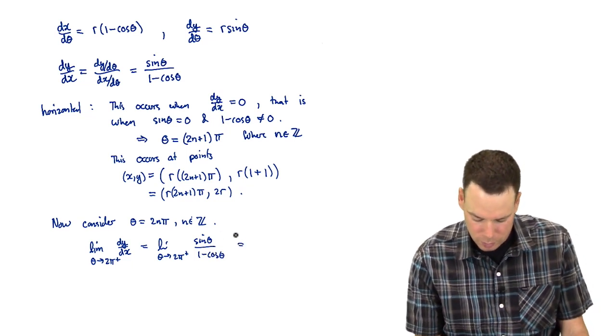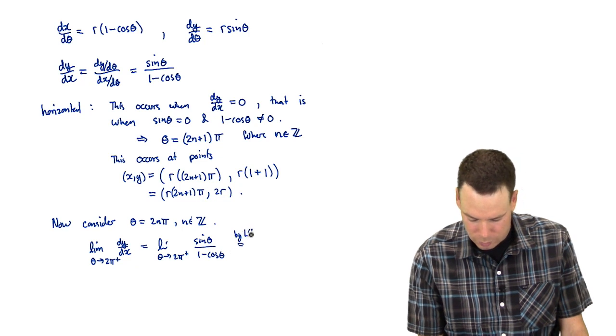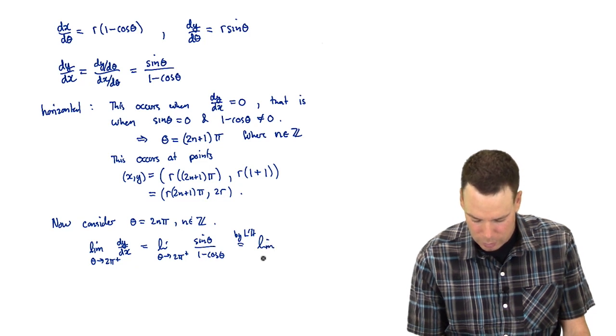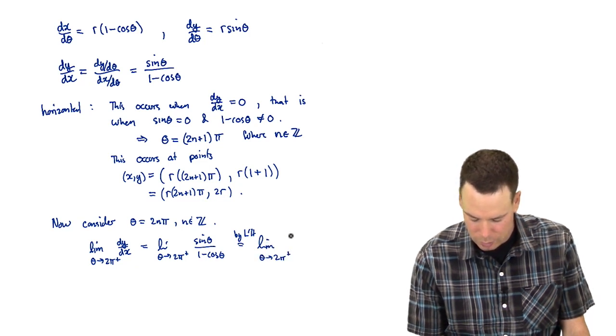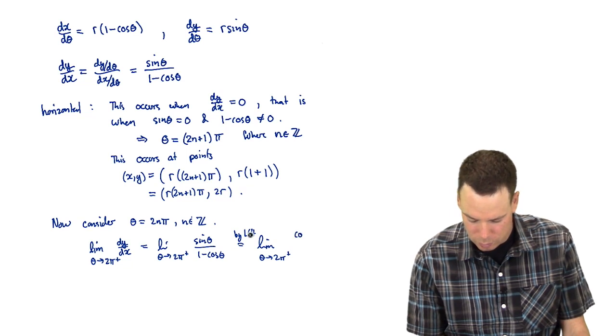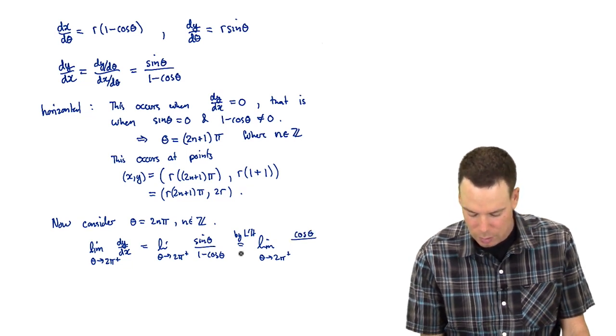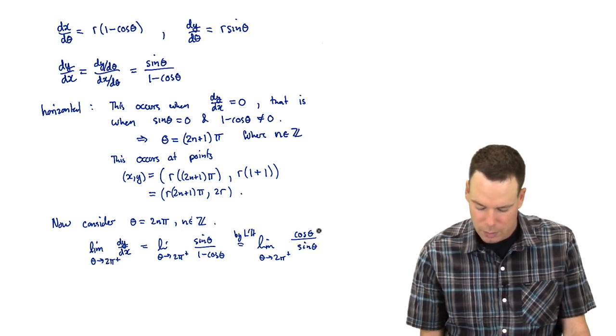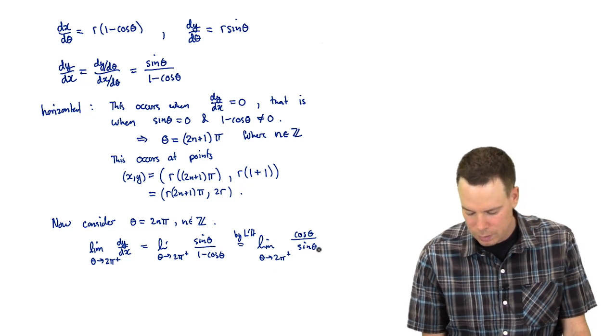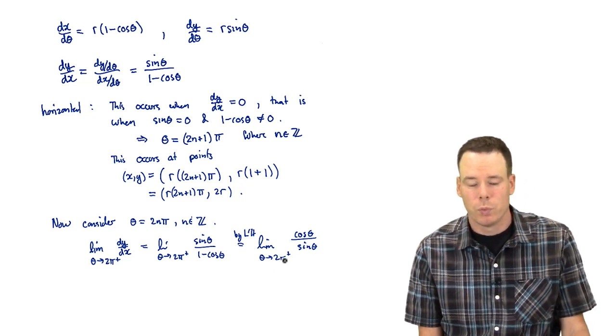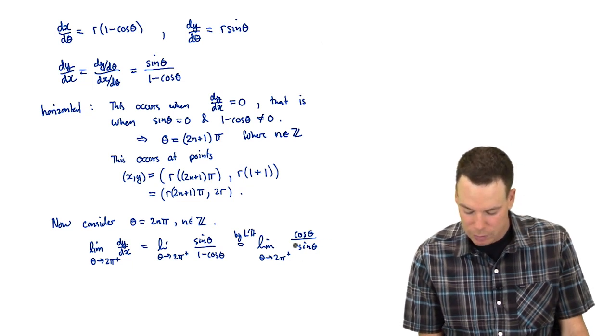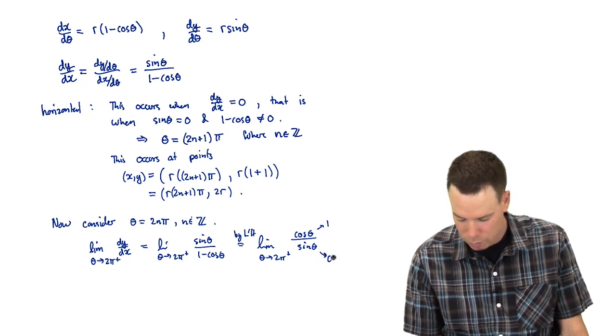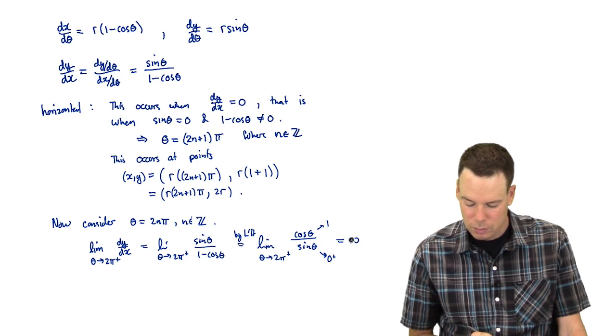The limit as theta goes to 2pi from the right of sine theta over 1 minus cos theta. Well, this is type 0 over 0. So we'd have to use L'Hopital. And I plug 2pi in, I get 0 on the top and 0 on the bottom. So by L'Hopital's rule, this is the limit as theta goes to 2pi from the right. The derivative of sine is cosine. And the bottom is sine theta. What happens at 2pi? Well, sine theta goes to 0. We're going to 2pi from the right. So sine theta is slightly bigger than 0. So this is going to 1. This is going to 0 through positive values. So the ratio is heading to infinity.